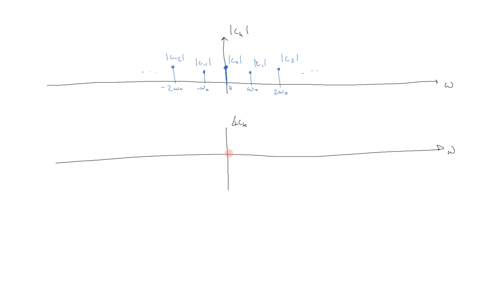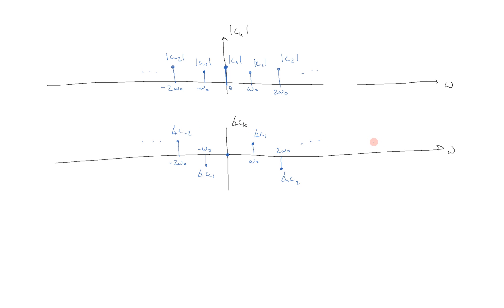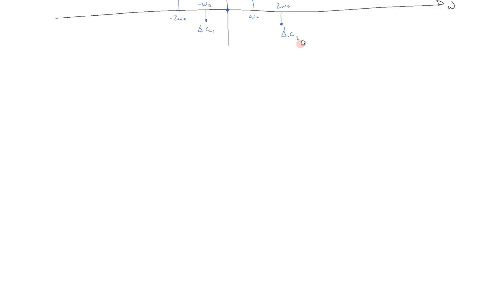With the phase, it's going to be similar. We assume a phase of 0 at 0. At omega naught, we plot the angle or phase of c sub 1. And we know it has to be the opposite due to odd symmetry at negative omega naught — that is the phase of c sub negative 1. Then if we have a negative phase at 2 omega naught, that is the phase of c sub 2, and we know it has to be the opposite at negative 2 omega naught for the phase of c sub negative 2. This keeps going depending on what actual coefficients you have.